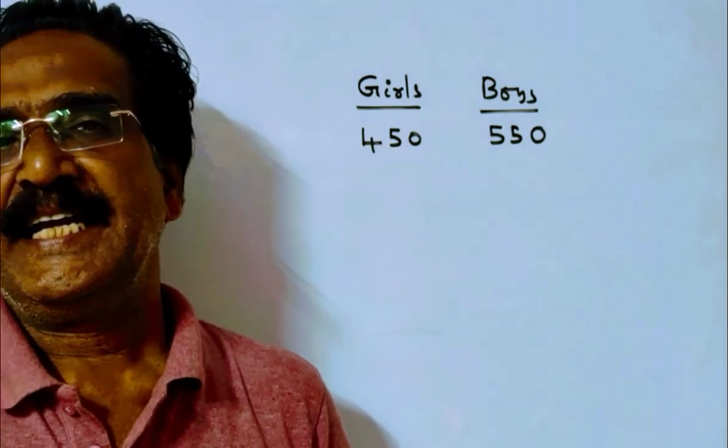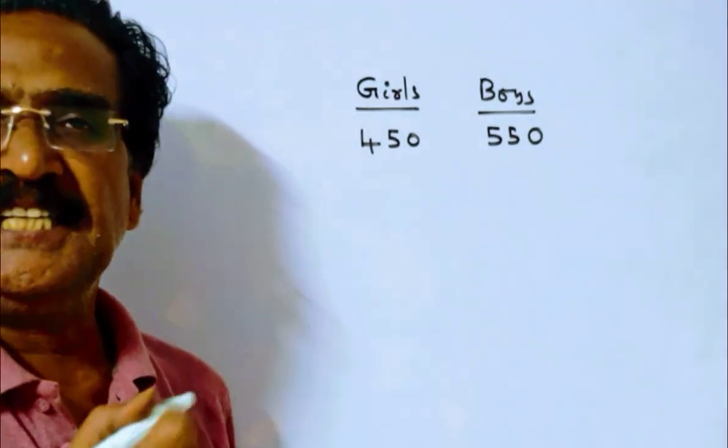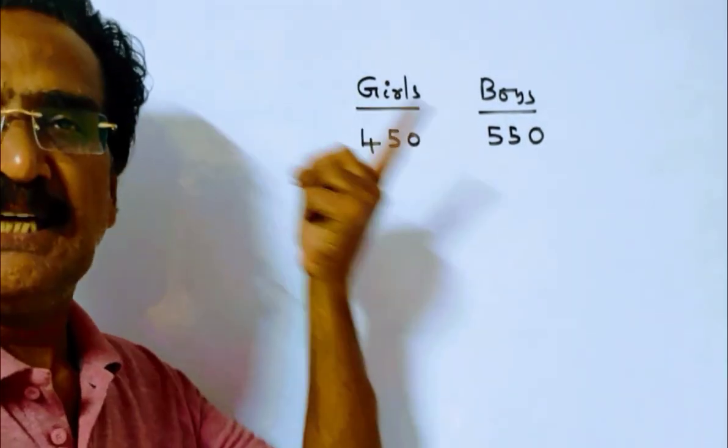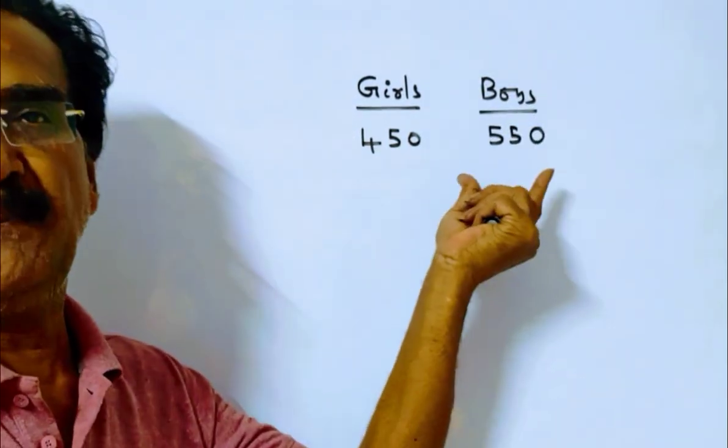A school has 45% girls. Say the total number of students is 1000, then girls will be 450 and boys will be 550.